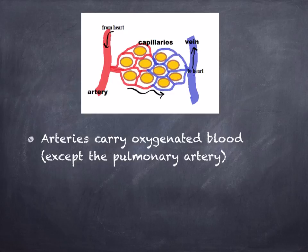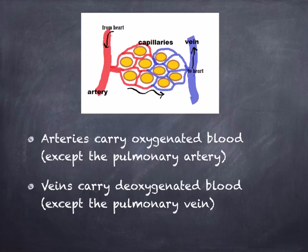What about veins — is the blood oxygenated or deoxygenated? Veins carry deoxygenated blood, except for the pulmonary vein, so we draw veins in blue. The capillaries are where oxygen is reaching the cells of the body, so the blood is gradually becoming deoxygenated — the colour goes from red to blue.